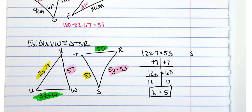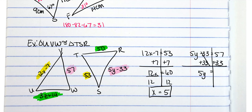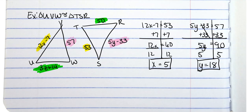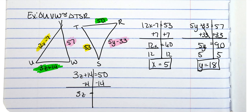For Y: 5Y minus 33 equals 57, add 33 to both sides, 5Y equals 90, divide by 5, and Y equals 18. For Z: 3Z plus 14 equals 50, subtract 14 from both sides, 3Z equals 36, divide by 3, and Z equals 12.